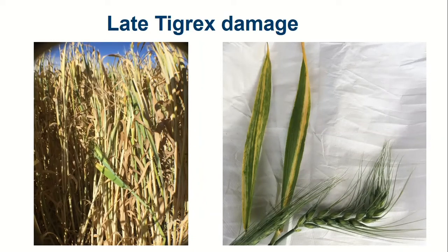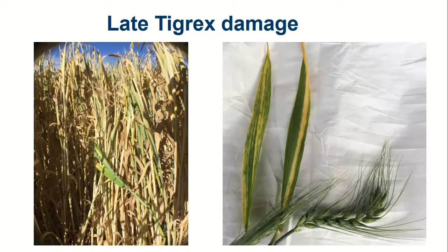We are getting a lot of reports of Russian wheat aphid causing crop damage, but on further inspection it hasn't been Russian wheat aphid — it's been the result of either herbicide damage or nutritional deficiencies in the crop. You can get streaking and deformed-looking leaves from herbicide and nutritional deficiency, not just Russian wheat aphid. To date, we cannot identify whether a crop has had Russian wheat aphid from leaf damage alone — we do actually need to see the aphid itself to confirm that the streaking is the result of Russian wheat aphid.